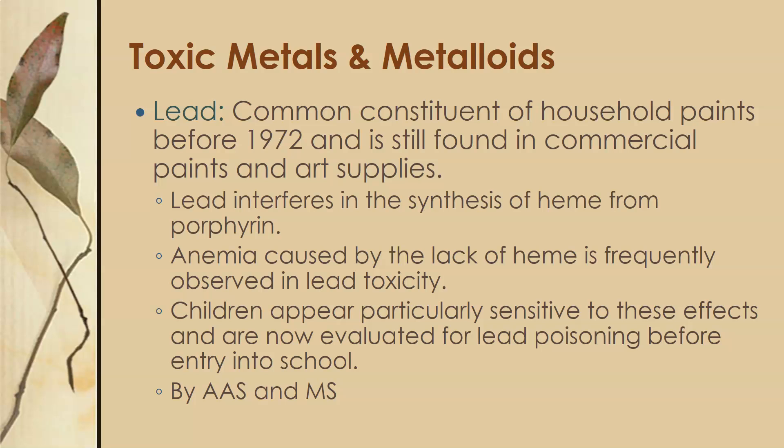Lead is a common constituent of household paints made before 1972 — some say before 1960 — and is still found in commercial paints and some art supplies. Lead interferes with the synthesis of heme from porphyrin, and the resulting anemia is frequently observed in lead toxicity. Children appear particularly sensitive to these effects and are now evaluated for lead poisoning before entering school. Lead can be detected by atomic absorption spectrophotometry and mass spectrometry.